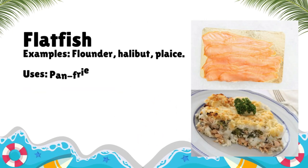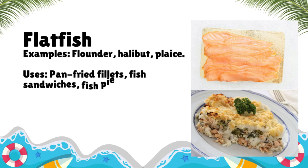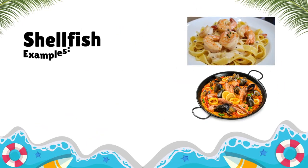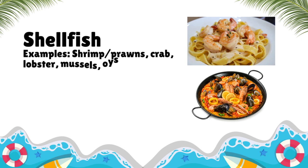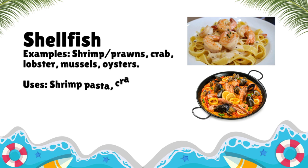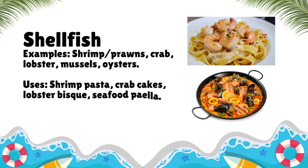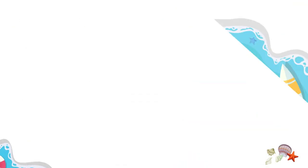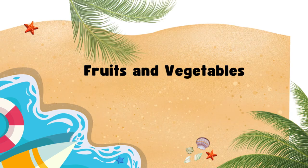Flatfish — Examples: Flounder, halibut, plaice. Uses: Pan-fried fillets, fish sandwiches, fish pies. Seafood — seafood paella.